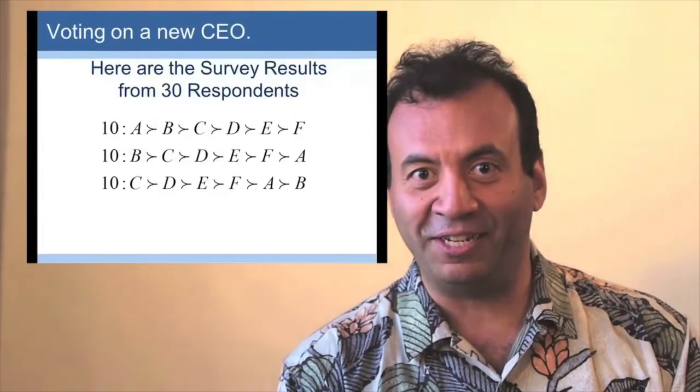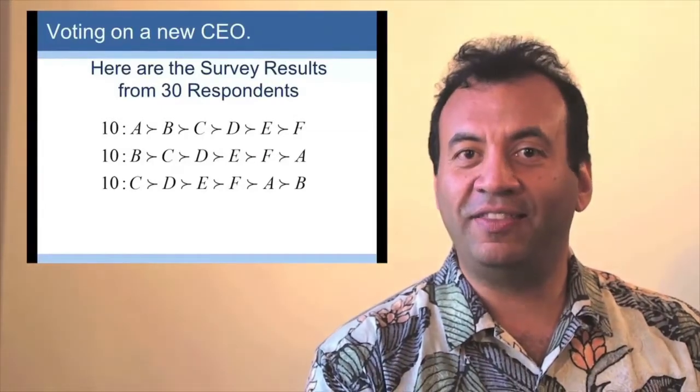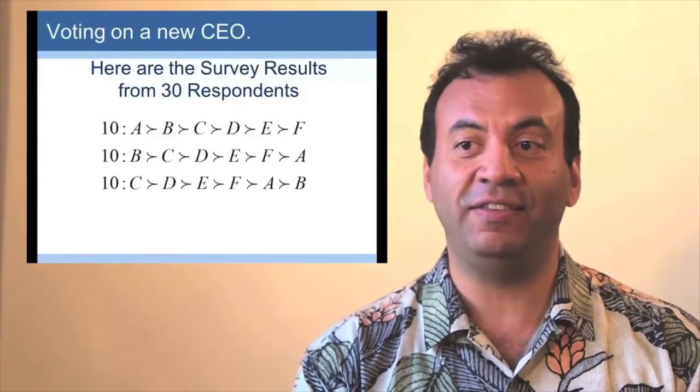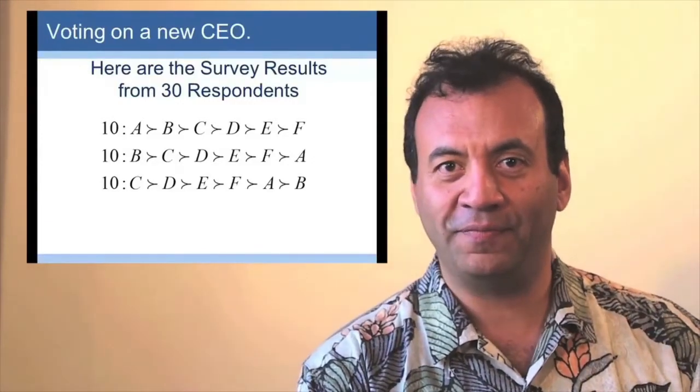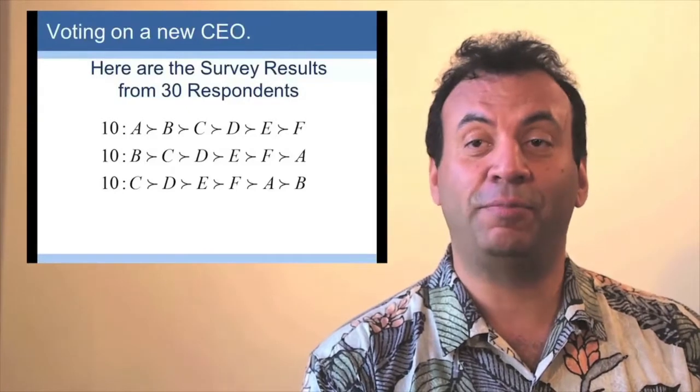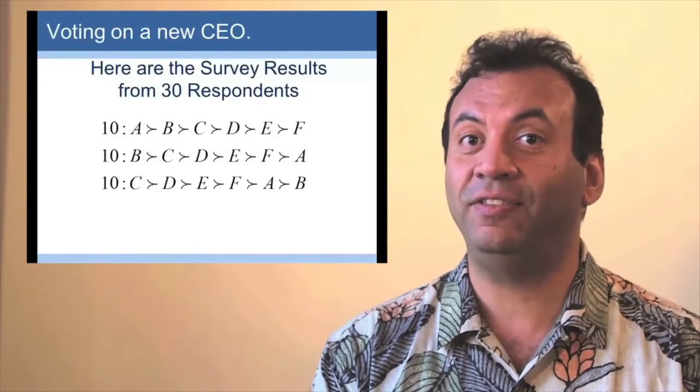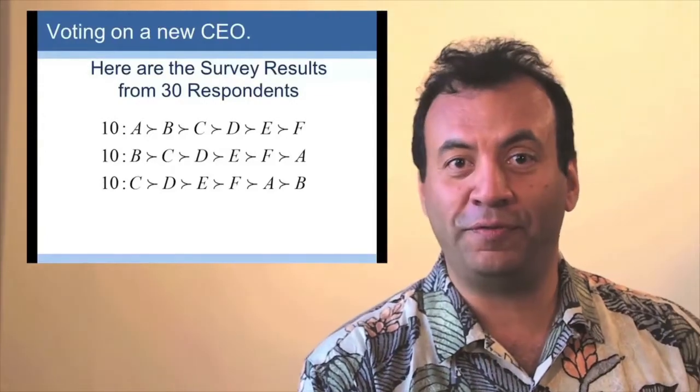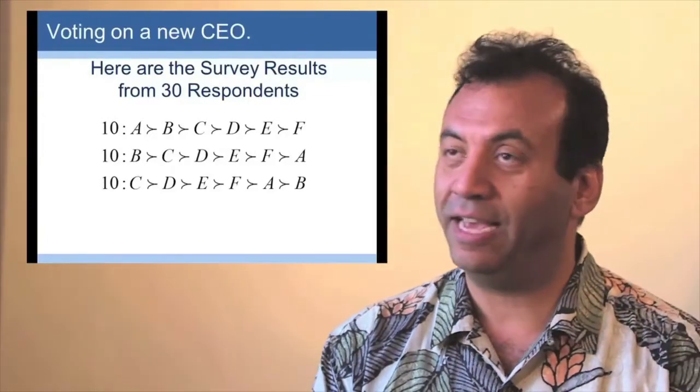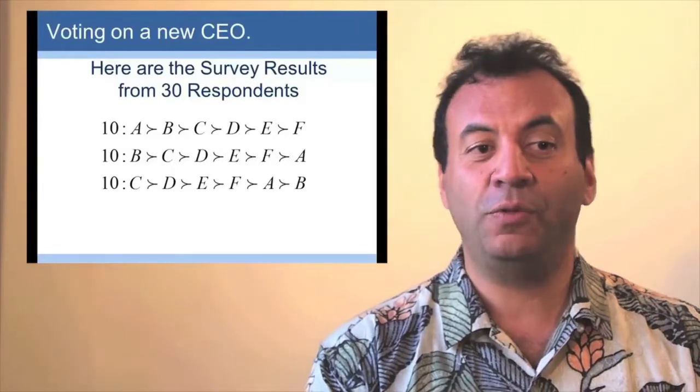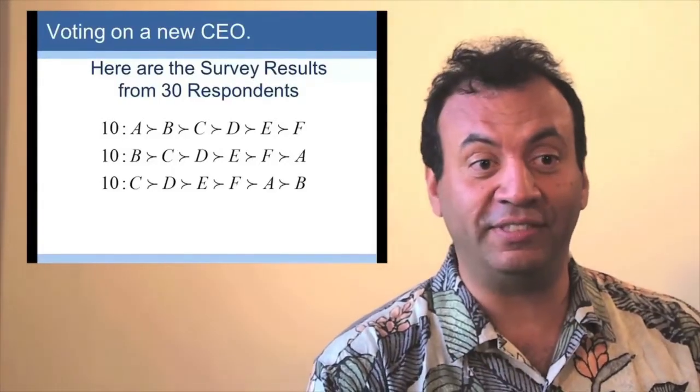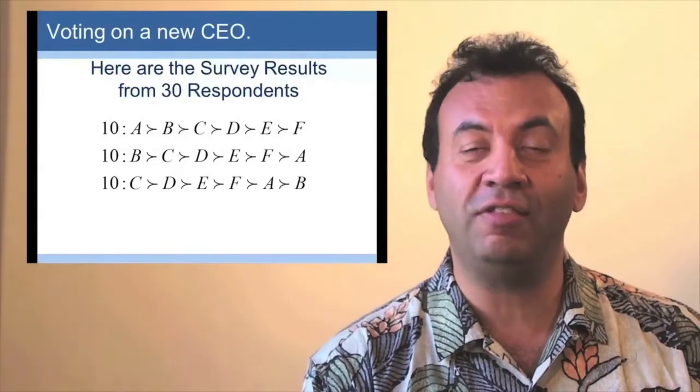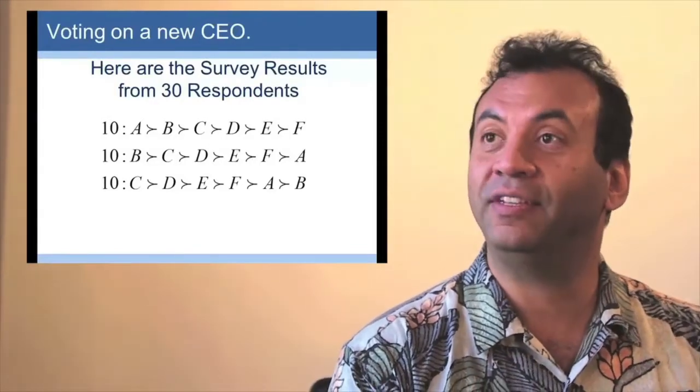So they get 30 votes from the company. Here are the survey results. Ten people prefer candidate A to B to C to D to E to F. Another ten prefer B to C to D to E to F to A. And the last group prefer C to D to E to F to A to B. There's one thing you might notice about this survey result,